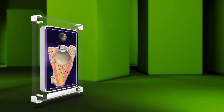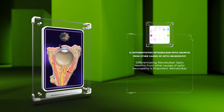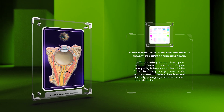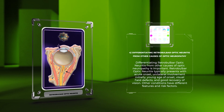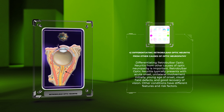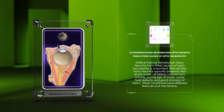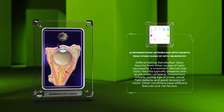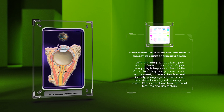Differentiating retrobulbar optic neuritis from other causes of optic neuropathy is important. Retrobulbar optic neuritis typically presents with acute onset, unilateral involvement initially, young age of onset, visual field defects, and good recovery of vision. Other conditions have different features and risk factors.